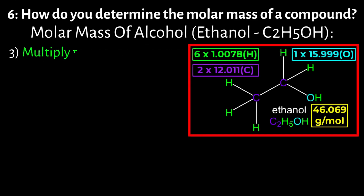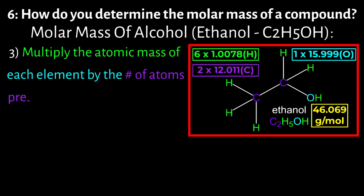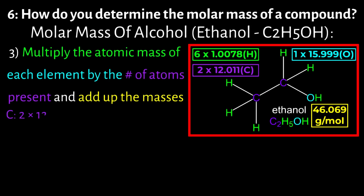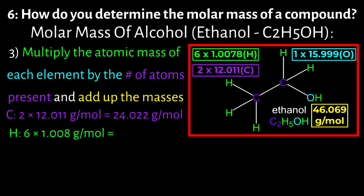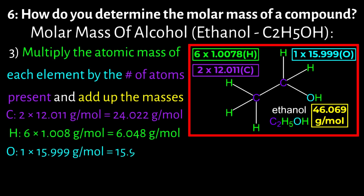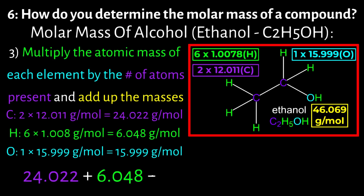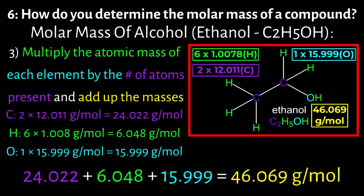Lastly, multiply the atomic mass of each element by the number of atoms present and add up the masses: carbon — 2 × 12.011 = 24.022 g/mol; plus hydrogen — 6 × 1.008 = 6.048 g/mol; plus oxygen — 1 × 15.999 = 15.999 g/mol. All of this added equals 46.069 g/mol. So the molar mass of ethanol, C2H5OH, is approximately 46.069 grams per mole.